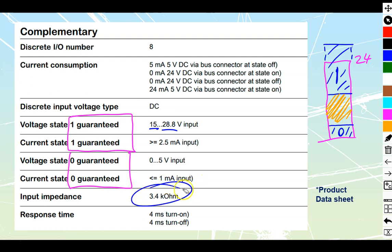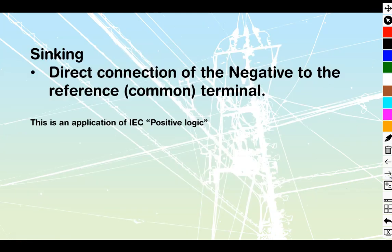Input impedance is going to be 3.4 kilo ohms. This is just going to limit the amount of current we have coming in there. And then response time is going to be in the milliseconds for turn on and turn off. We're going to be using a sinking input connection. Sinking always refers to a direct connection of the negative to the reference or to the common terminal. And the way that we're using this as sinking on input would be an application of IEC positive logic. There is a complete other video out of the 221 video set that deals with sinking and sourcing. It's about 20 minutes long. So if you don't understand them, watch through the whole thing. We go through sinking, sourcing, and then we also go through IEC positive logic and negative logic. Hopefully, it should be enough that you can get an understanding of that topic because it's critical. There is some danger using the IEC negative logic, not with the positive logic though.